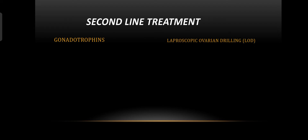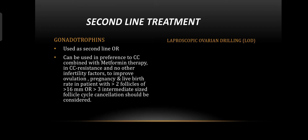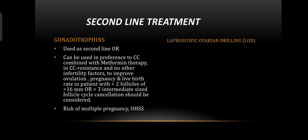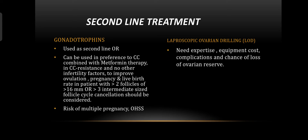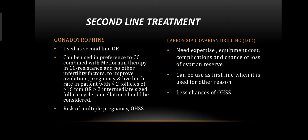The second-line treatment for ovulation induction includes gonadotrophins or laparoscopic ovarian drilling. Gonadotrophins are used as second-line, or can be used in preference to clomiphene citrate combined with metformin in clomiphene-resistant cases with no other infertility factors, to improve ovulation, pregnancy, and live birth rates. If there are more than two follicles greater than 16 mm or three intermediate-size follicles, cycle cancellation should be considered. The risk of multiple pregnancy and ovarian hyperstimulation syndrome is high with gonadotrophins. Laparoscopic ovarian drilling requires expertise, equipment, and cost, and carries risk of complications and loss of ovarian reserve; it can be used as first-line when performed for other reasons.